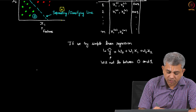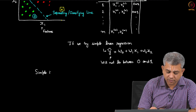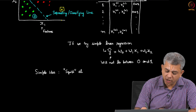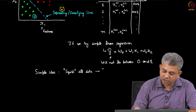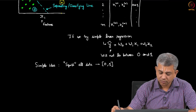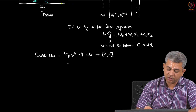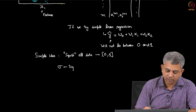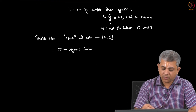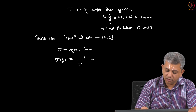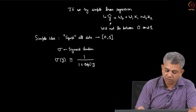This is why we use a very simple idea: to squish all data to the range 0 to 1, which is what we require as our output. We use something called the sigmoid function. The sigmoid function is defined as follows: 1 divided by (1 plus e to the power minus z).